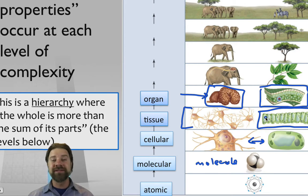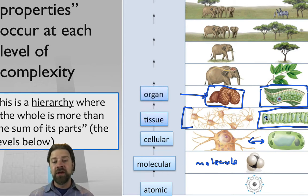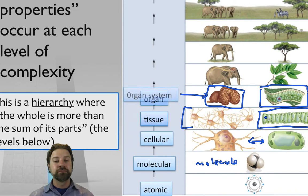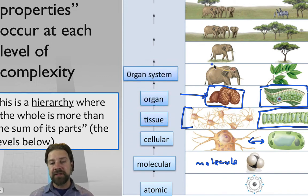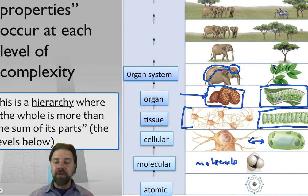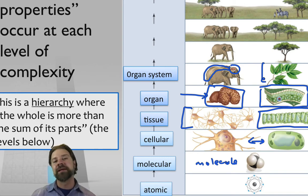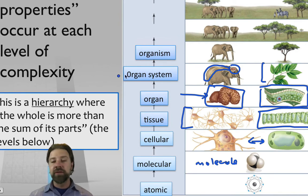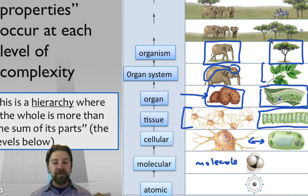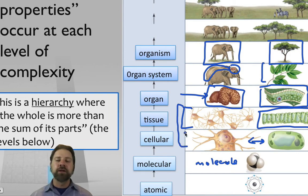Throw organs together in coordinated function and you reach the organ system level — for example, the brain and spinal cord together, or a twig with multiple leaves. Put enough organ systems together cooperatively and you reach the organism level: a complete organism of its own species that can reproduce. Today's talk, however, will focus down at the cellular and tissue level.